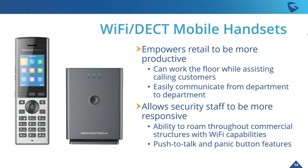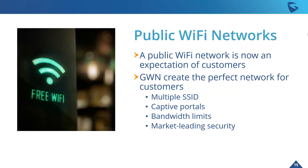Mobility is a huge factor in commercial deployments. Our Wi-Fi and DECT mobile handsets empower retail employees to be more productive — they can work the floor while assisting calling customers, meaning commercial owners can employ fewer people because each employee is more productive. This also allows easy department-to-department communication while assisting on-premise customers. For larger malls and commercial structures, security staff can roam throughout the building with Wi-Fi capabilities while communicating with each other. Push-to-talk and panic button features enable fast communication in emergencies.